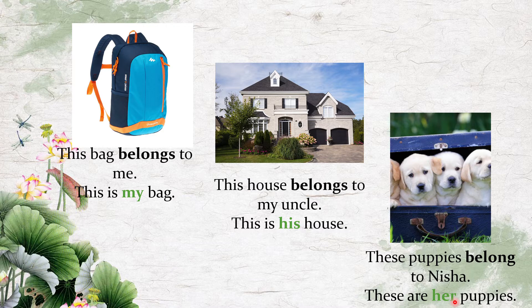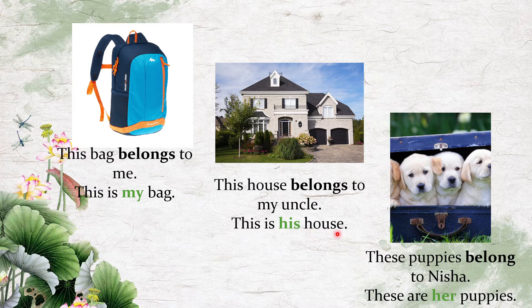Words like my, his, her, your are all called possessive adjectives. They are adjectives in the sense that they describe the noun — 'my' describes the noun 'bag,' telling you the bag belongs to me. 'His' gives you more information about the noun 'house.' They are possessive because they tell you whom or to what the noun belongs. That is the meaning of a possessive adjective.